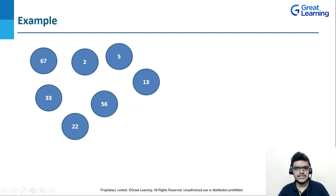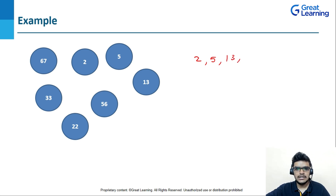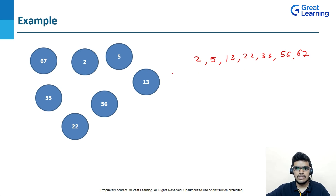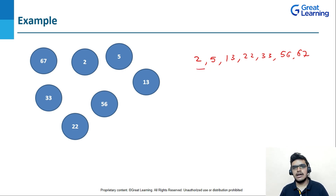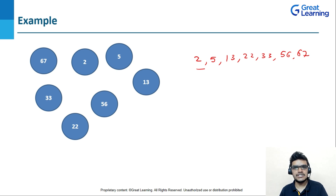Let's look at an example. Here I have a priority queue with values in ascending order: 2, 5, 13, 22, 33, 56, and 67 — a total of 7 values. The priority is from least to greatest, meaning 2 has the highest priority. As mentioned, the element with the higher priority will be removed first. Now let's look at the operations involved in a priority queue.